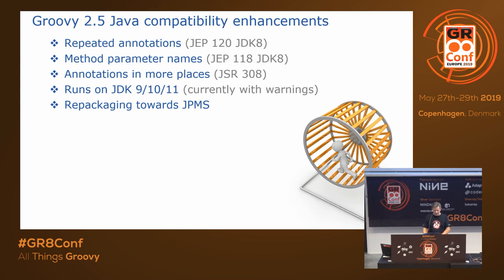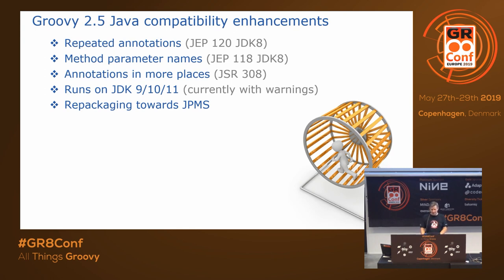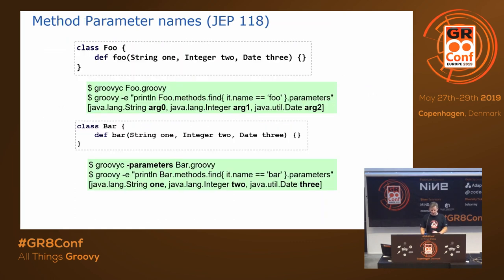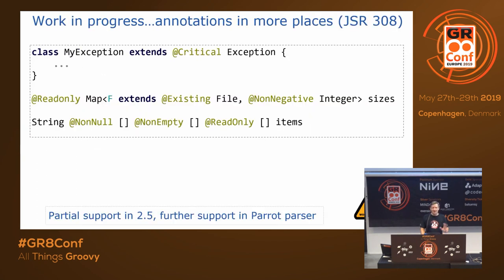Annotations can now appear in more places. For example, you can have a read-only map of a type that extends existing files with non-negative integer sizes, or a string array of non-null non-empty read-only items. Java has hooks for this but doesn't yet do much with most of these annotations — the same is currently true for Groovy, though turning on more support in this space is something we're looking at for Groovy 4. Groovy also works the same as Java for argument parameter access.